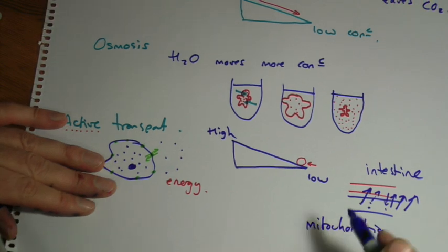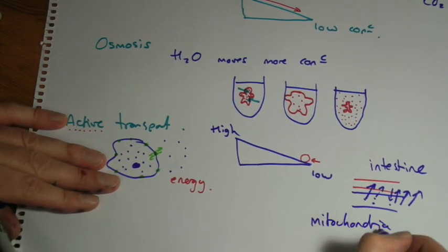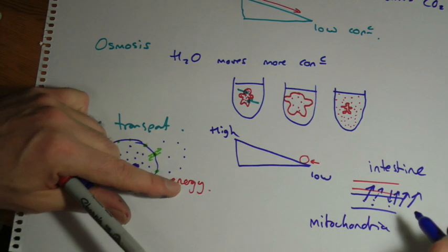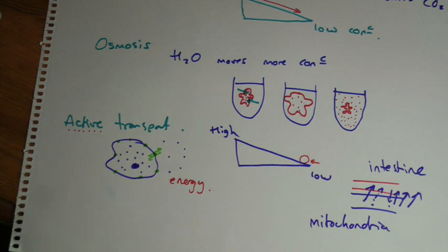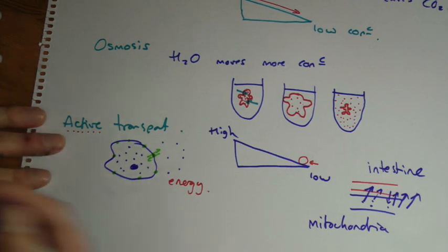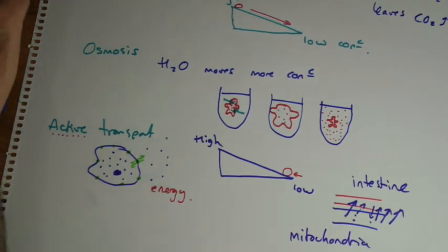Mitochondria, if you remember, aerobic respiration will provide lots of energy for the cell, and active transport requires energy. So we'd find cells that do a lot of active transport use a lot of mitochondria. In fact, all cells are really doing some form of active transport, it's a very common thing.